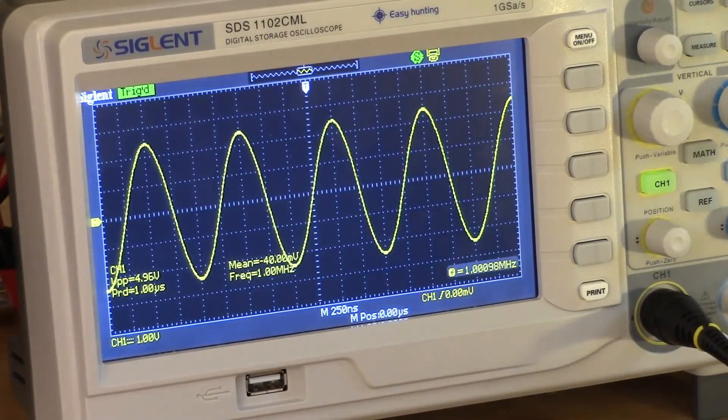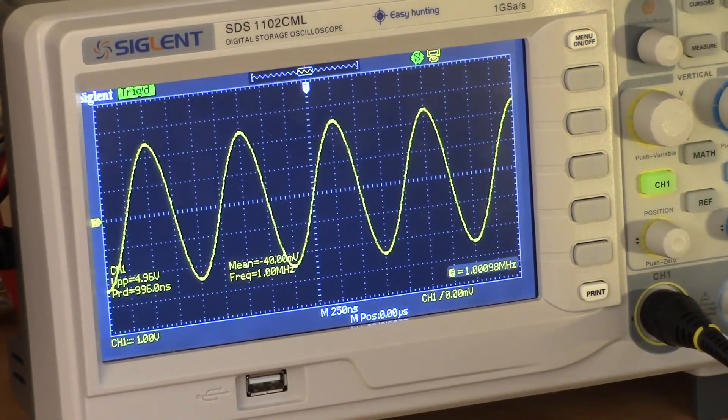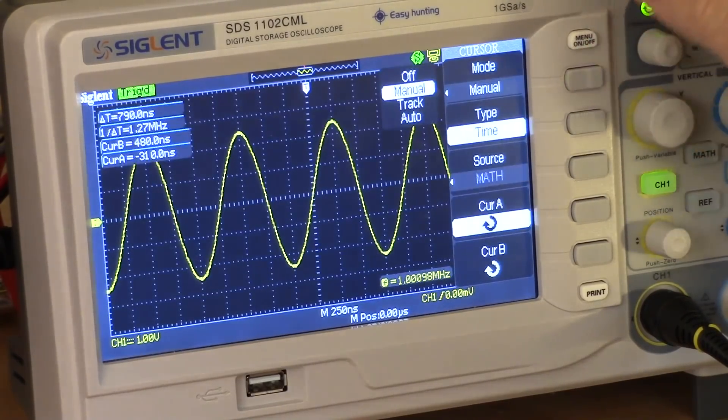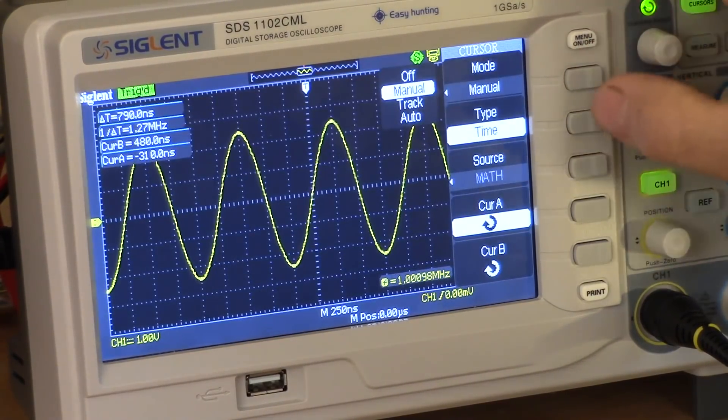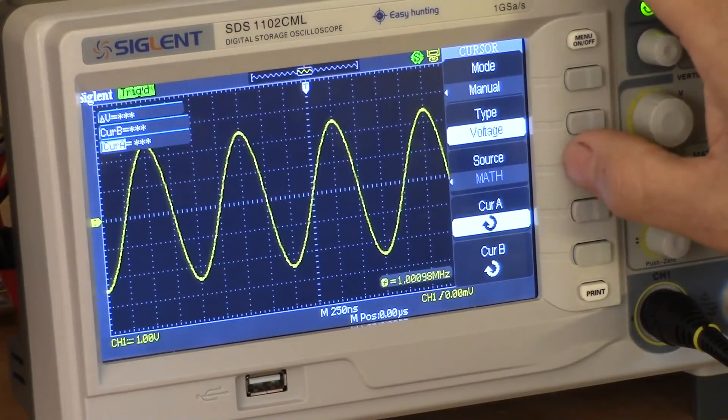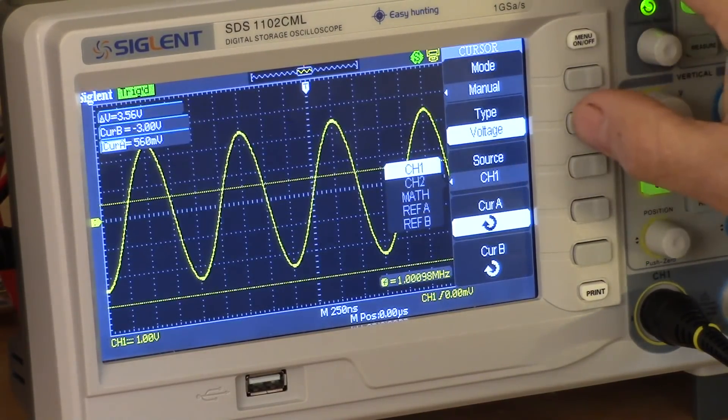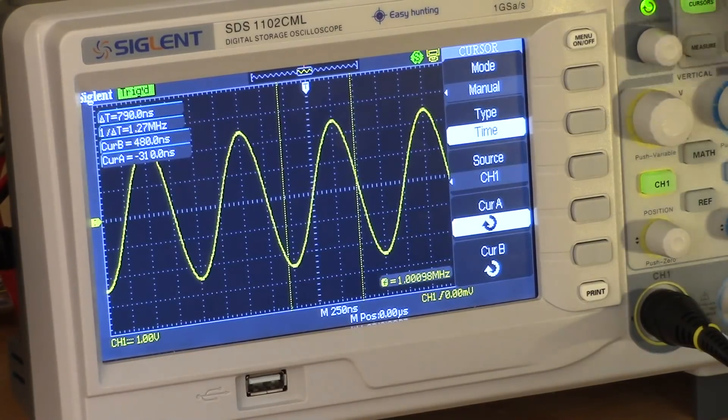In addition to all the measurements that it takes, it does support cursors as do most scopes nowadays. And it's a pretty standard sort of setup. You can set cursors for time, voltage. You can set the channel. Here I'll go ahead and set cursors on Channel 1. And I'll go ahead and set time cursors.